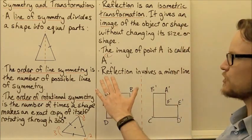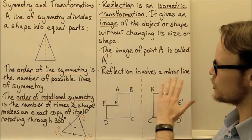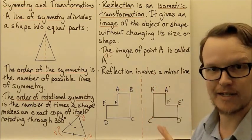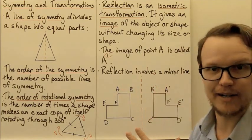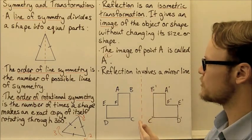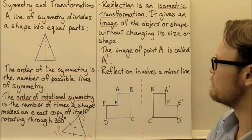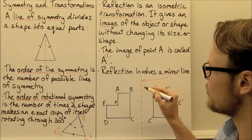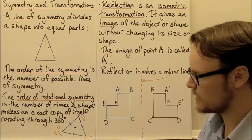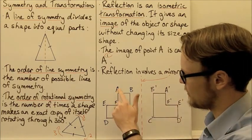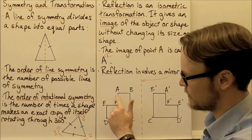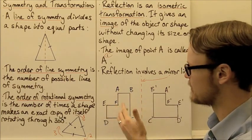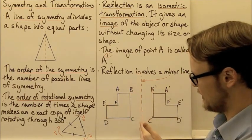So if we're going to reflect a shape or an object, we need to have something to reflect it around. We can draw in a mirror line — this is our mirror line. Here is our original shape with vertices A, B, C, D, E, F.